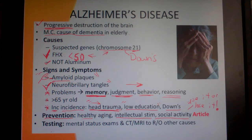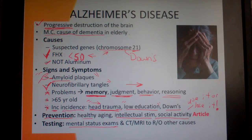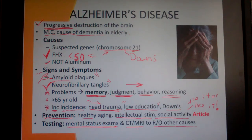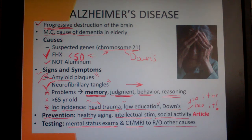You always want to do something to stimulate your mind throughout your entire life. There are mental status exams where you literally ask the patient questions and test their memory. CT and MRI are also used — you have to rule out other causes and make sure you're not diagnosing someone with Alzheimer's when they might actually have, for example, bleeding inside the brain.